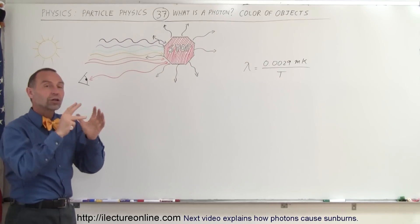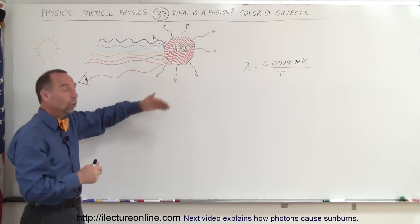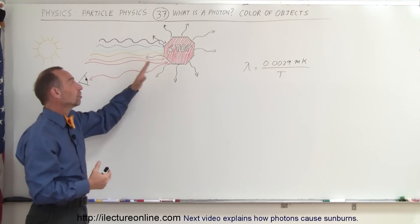So white is simply all the colors combined and red is only the red being reflected and the others being absorbed.